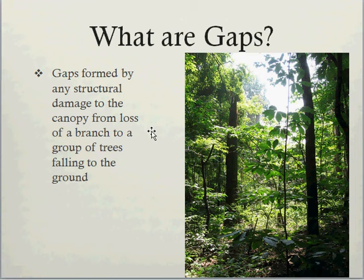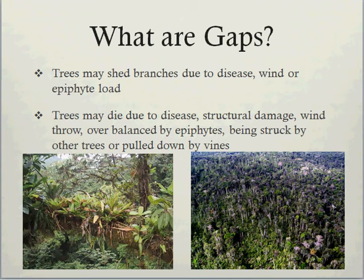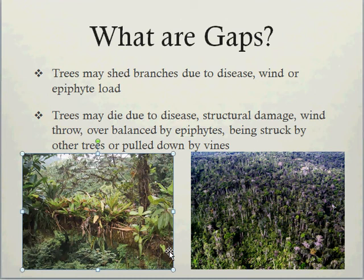So gaps occur fairly frequently. Trees may shed branches due to disease, wind, or epiphyte load. Here's a picture of large numbers of tank bromeliads on the branch of a tree. Each of these tank bromeliads may hold several litres of water, which can dramatically increase the load on the branch — not great structurally — and it may break or snap the branch off. However, many trees are able to bear this sort of load. So branches may be shed because of disease or wind, creating that small gap in the canopy.